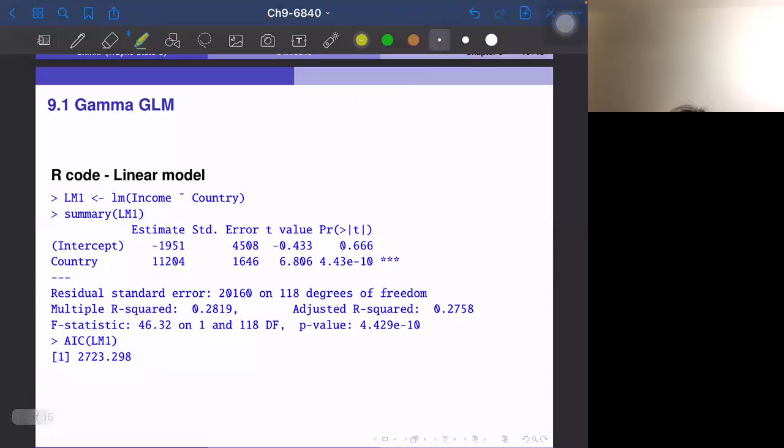So this is the linear regression result. Intercept is almost zero. I mean negative 1,900, but standard deviation is large. So remember that basically y is approximately 10,000 times i. So intercept is around zero. That is reasonable. And the coefficient is 11,000 and the standard error is 1,600. So it's around 10,000. So that's reasonable. And t-value 6.806. And we have several statistics. So residual standard error. Standard size of error is 20,160. And AIC, basically this is the fit. AIC is 2,723. So this will be compared with GLM, Gamma GLM later.